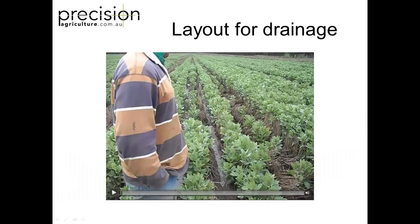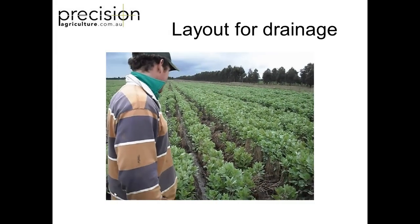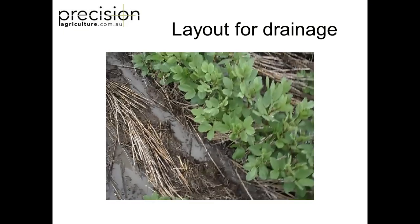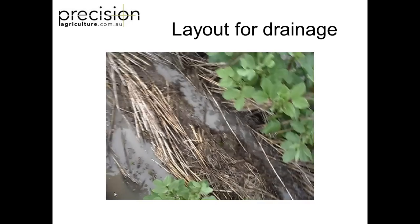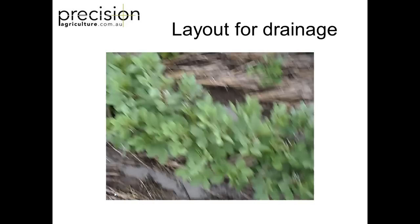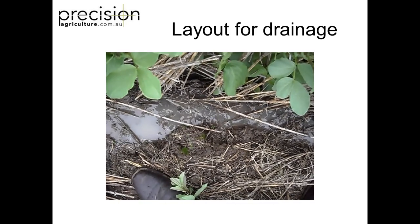Here's a video of us in the field where we've done some layout work and changed the run direction. You can see the water running out of this field quite clearly. Each row of faba beans — this is in the high rainfall zones of Victoria — is running water quite well. And that's without any raised beds whatsoever; it's just natural furrows from wheel tracks and from the furrowing where we've planted the crop.